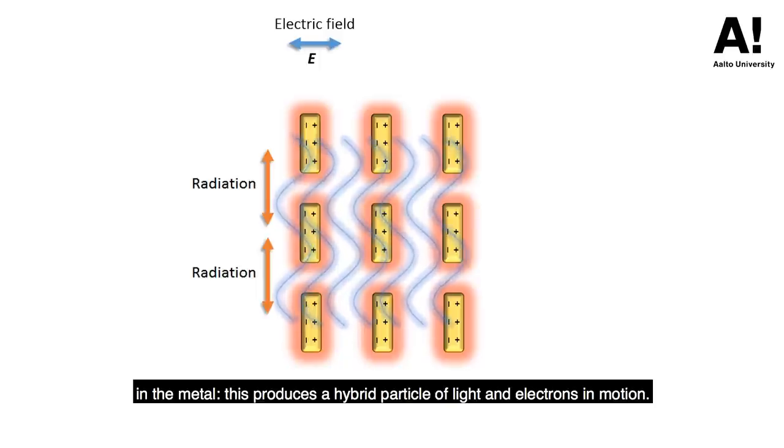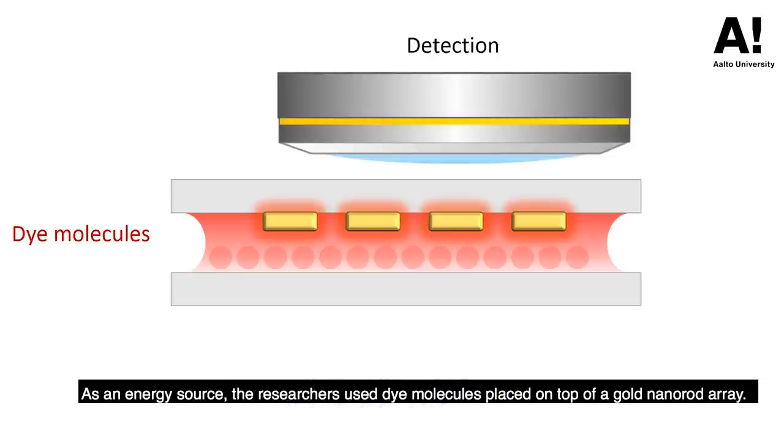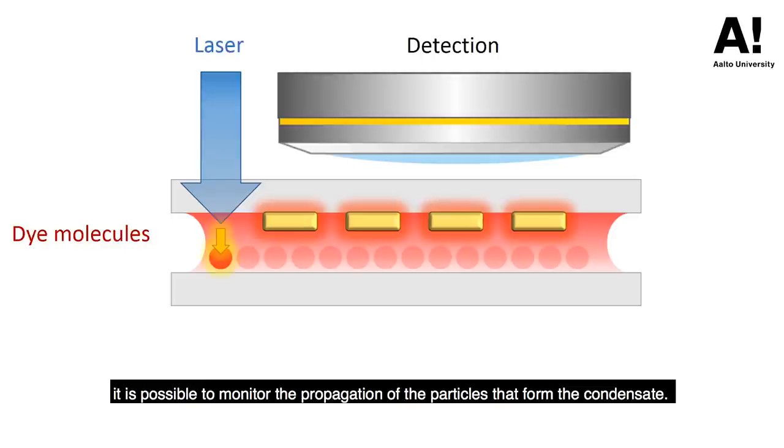As an energy source, the researchers use dye molecules placed on top of a gold nano rod array. By exciting the molecules at one end of the array, it is possible to monitor the propagation of the particles that form the condensate.